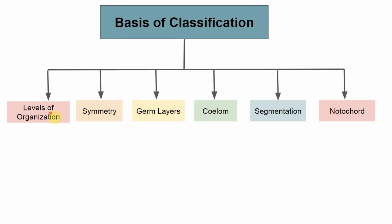Every animal has its own level of organization. The first level is the cellular grade of organization, observed in Porifera. The next is tissue grade of organization, observed in Coelenterata and Ctenophora. Next is organ grade of organization, observed in Platyhelminthes. The highest level is organ system grade of organization, found from phylum Annelida onwards.